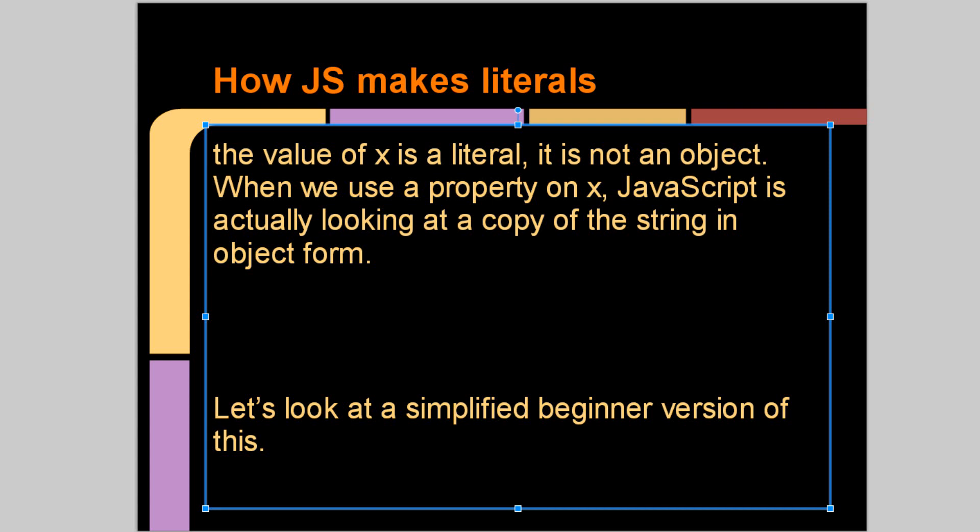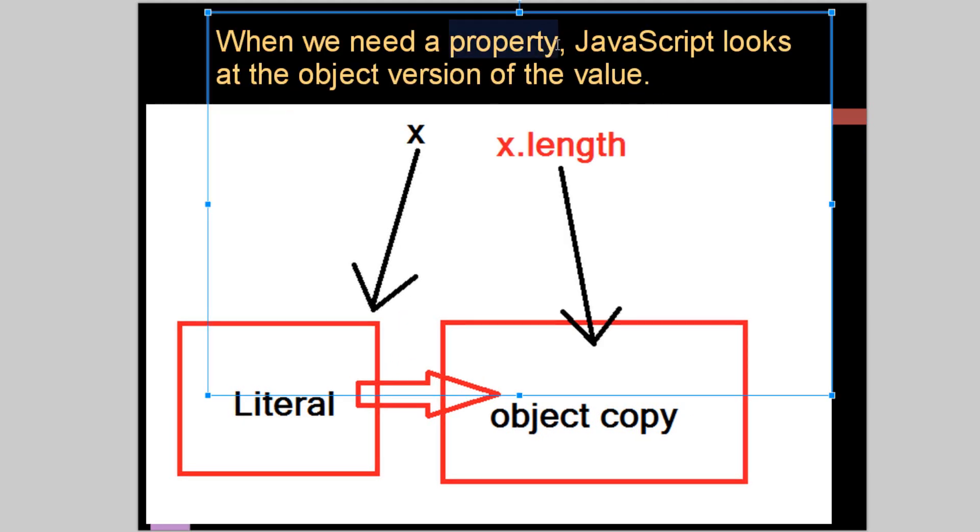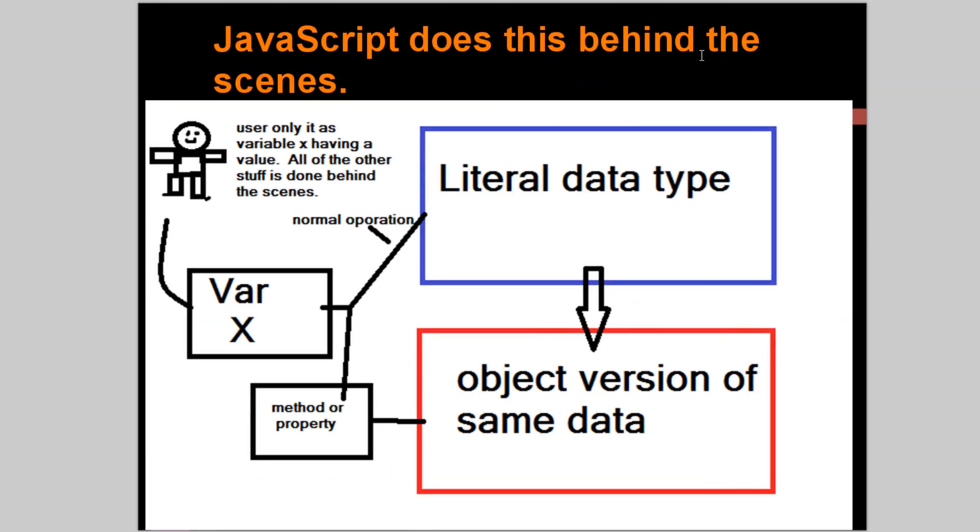Here we have x, it's a variable with a value. The value is going to be a literal, and when necessary, JavaScript is going to create an object copy of this. Pretty much when we need a property, which is something only objects have, JavaScript looks at the object version of the value. So x.length is going to look at the object copy, not the literal. JavaScript does this behind the scenes, so users only see it as variable x having a value. All the other stuff is done behind the scenes, and you're not really going to know about it unless you work in depth with JavaScript.